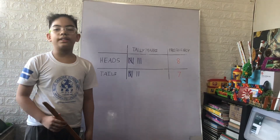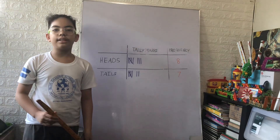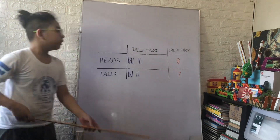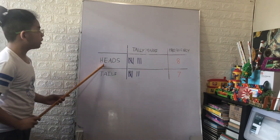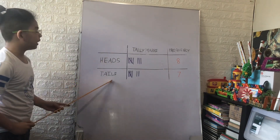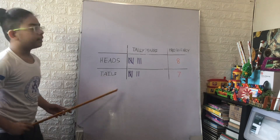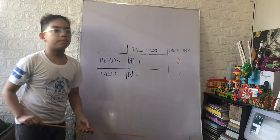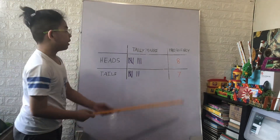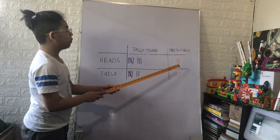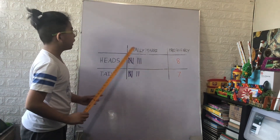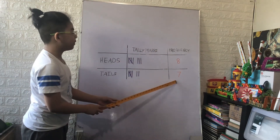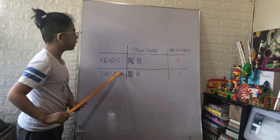After tossing the coin 15 times, I got 8 heads and 7 tails. This also gives me a frequency of 8 for heads and a frequency of 7 for tails.